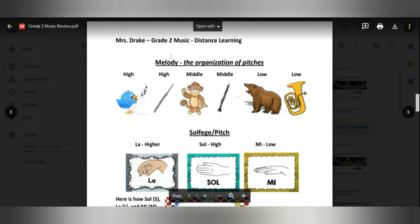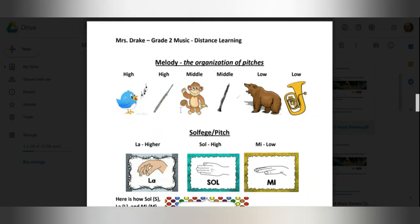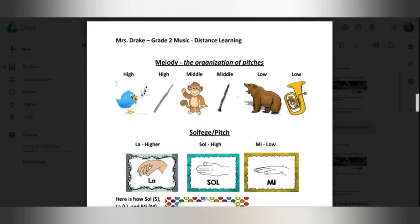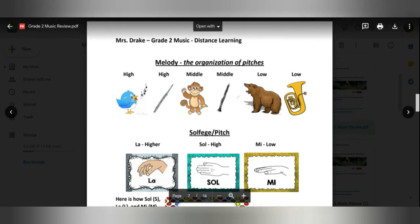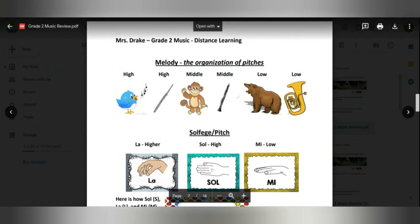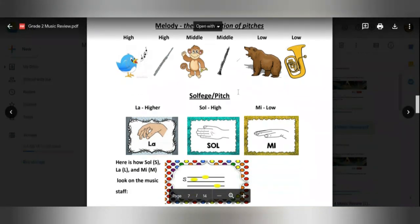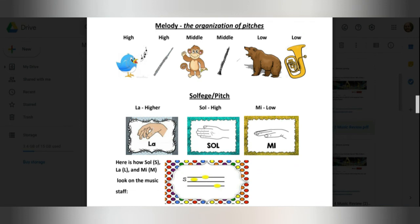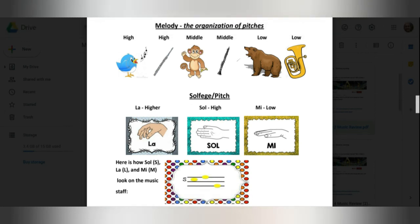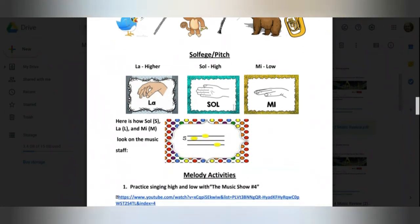Then we started to look at melody. And we always practice using our singing voice in music class. So some of us like to sing higher, like a bird or a flute. Some middle sounds, kind of like a monkey or a clarinet. And our low sounds are like a bear or a tuba. And we identify those with our solfege or our pitch. So we use these hand signs and these solfege syllables, so, me, and la, to help us make sure that our singing voice is matching the correct pitch. That's why we use those.